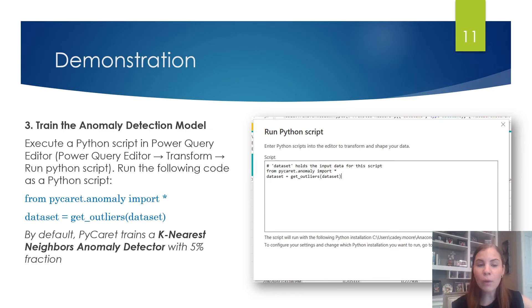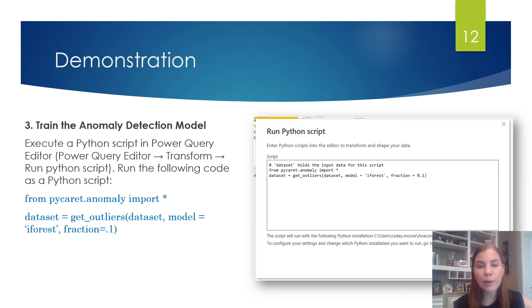Note that by default, PyCaret trains a k-nearest neighbors anomaly detector with 5% fraction. However, you can change both the fraction value and the model type using the fraction parameter and model parameter respectively. So for example, if we wanted to use an isolation forest model with a 0.1 fraction, we could modify our code as it is pictured on the screen.